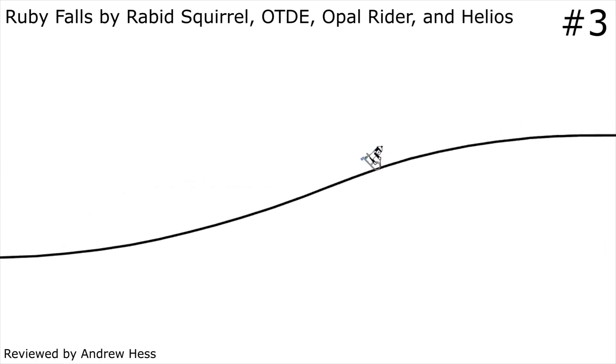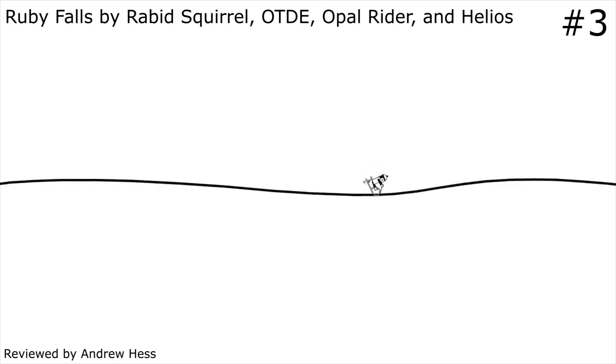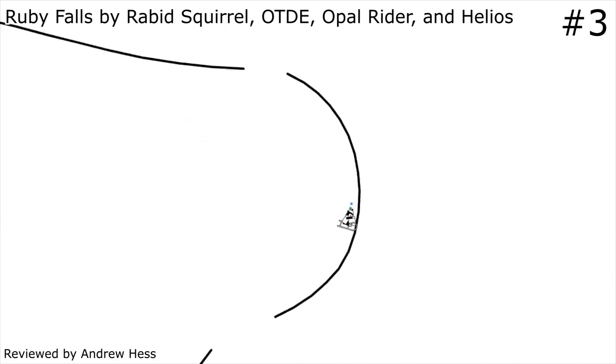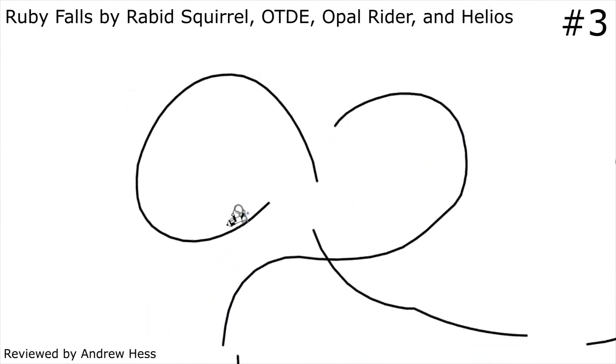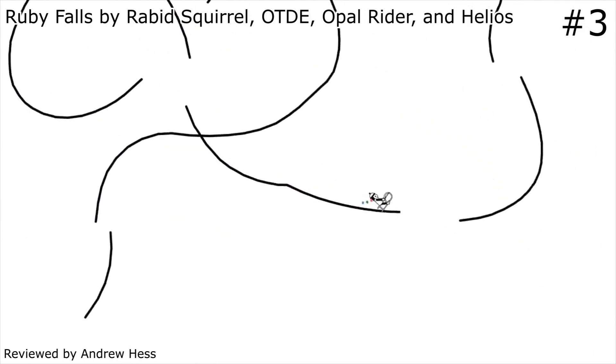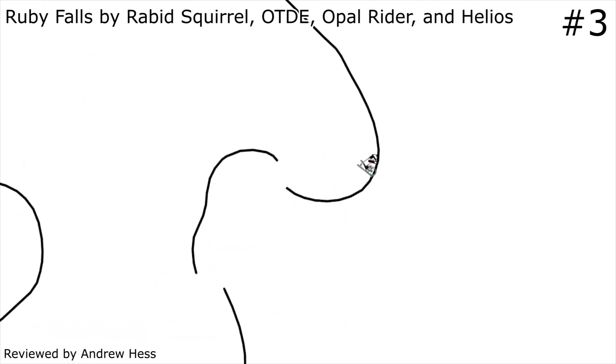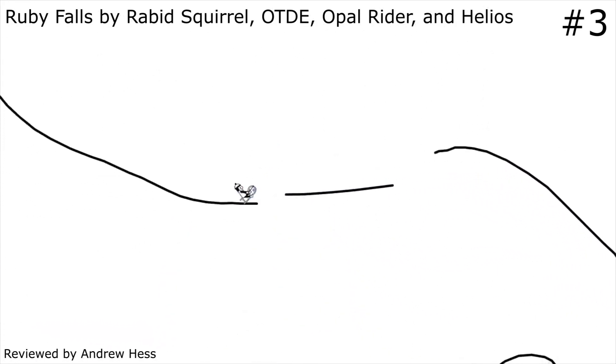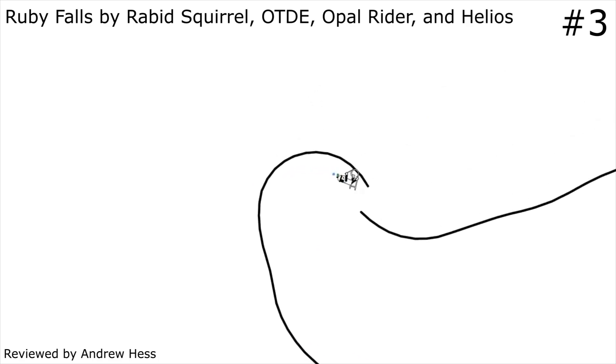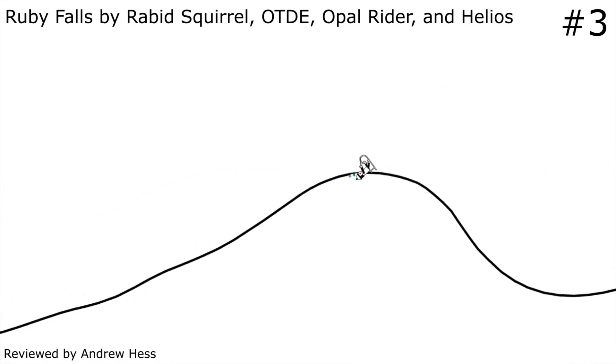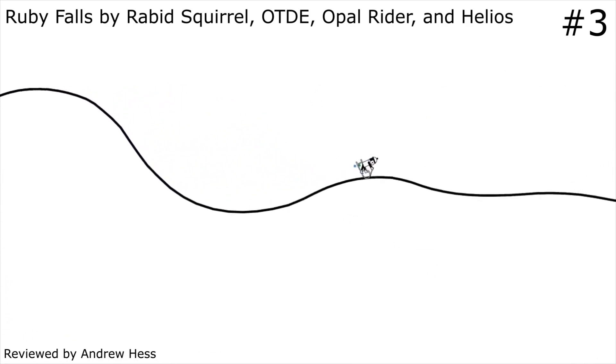Throughout the track, Rabid Squirrel uses technically proficient manuals but always prioritizes capturing the mood and emotions of the music over showing off tricks and technique. Though the track reflects a variety of tonal shifts, none of these transitions feel jarring or out of place. With its technical proficiency, impeccable syncing and its ability to evoke the wide variety of moods presented by the music, Ruby Falls has something for everyone to enjoy.